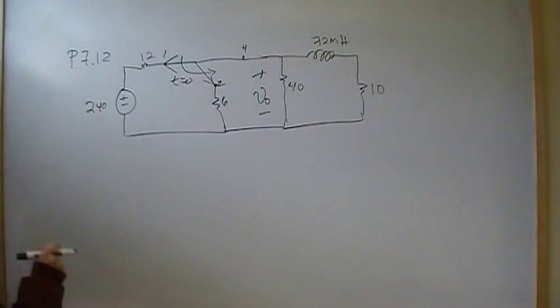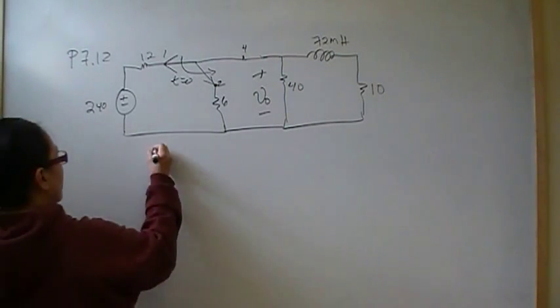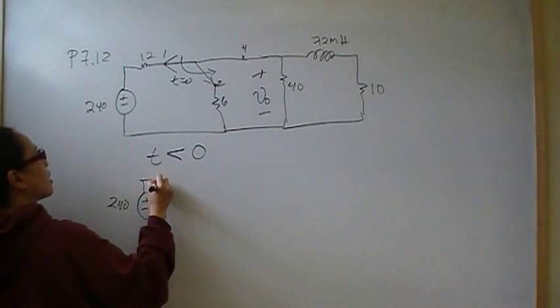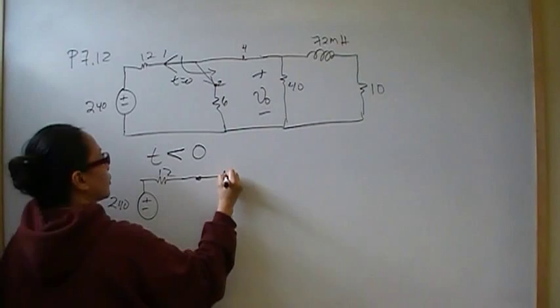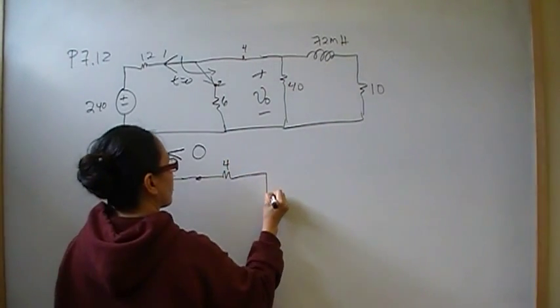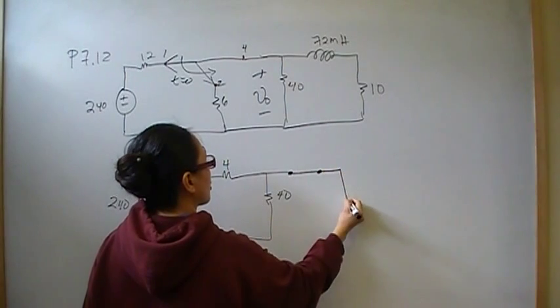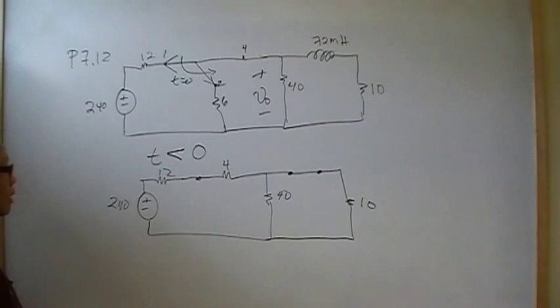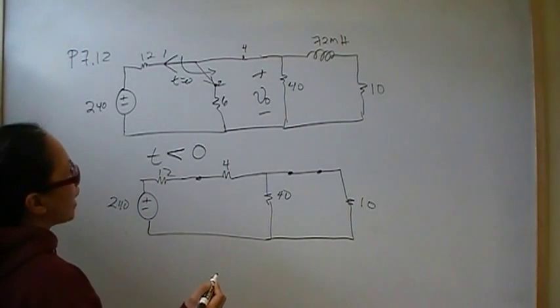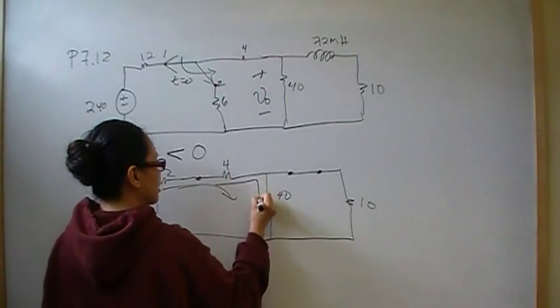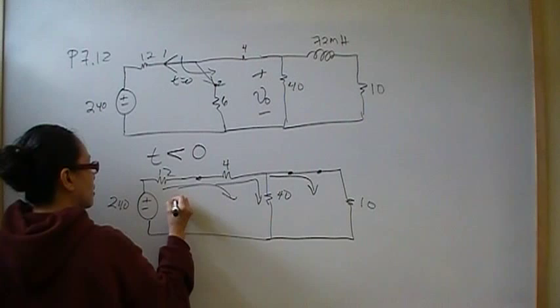We're looking for the general equation for the voltage drop across the 40 ohm resistor. So let's go ahead and take a look at the circuit before the switching happens. So before time zero, the circuit looks like this. Plus, minus, 240, 12 here, 4, 40. The inductor is a short circuit, and 10. So we have some current that's going through here that's going to split at that branch. So we have some I total that's going to split something here and then something through the inductor. So we need to find the I total.